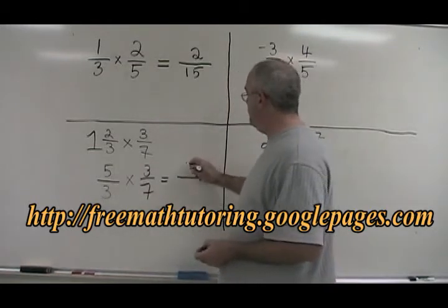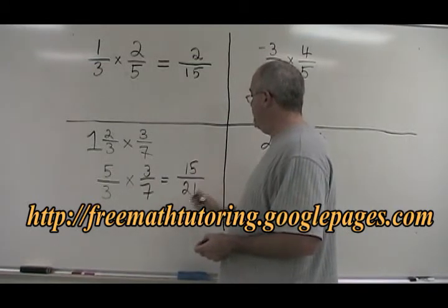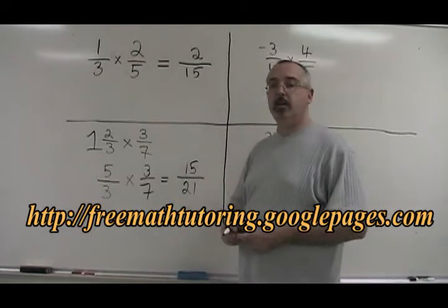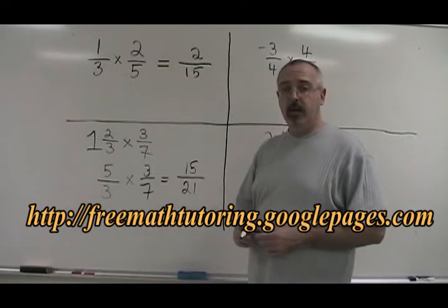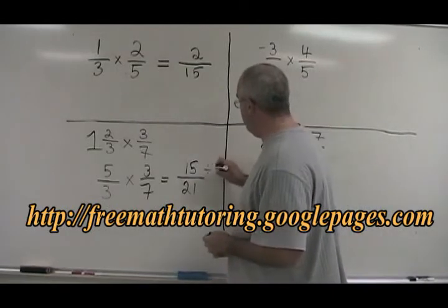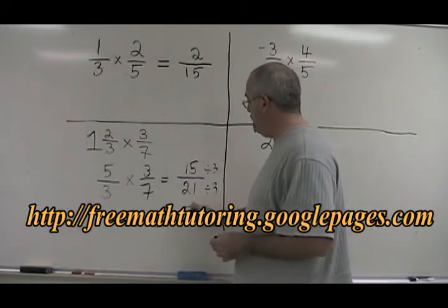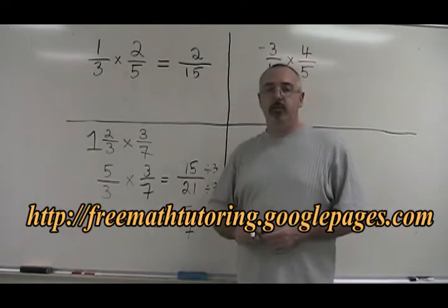5 times 3 is 15. 3 times 7 is 21. But this fraction can be reduced. 15 and 21 have a common factor of 3. If we divide both of them by 3, 15 divided by 3 is 5, 21 divided by 3 is 7. Our answer is 5 over 7.